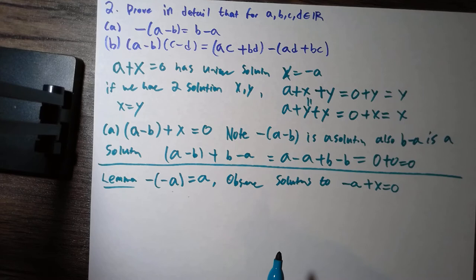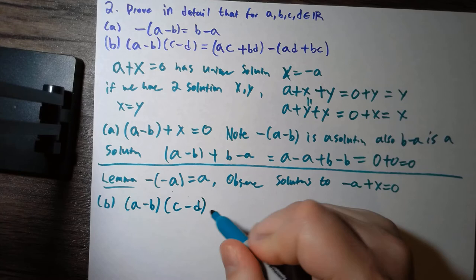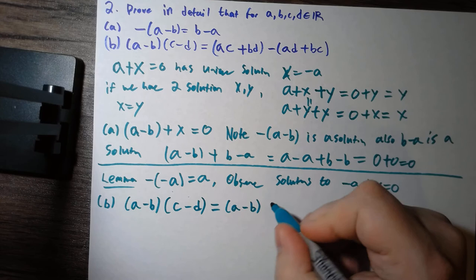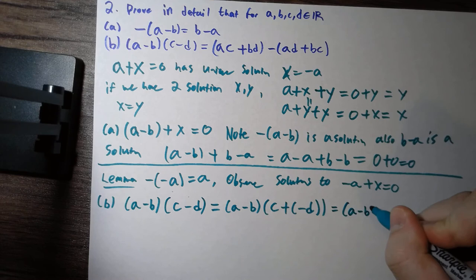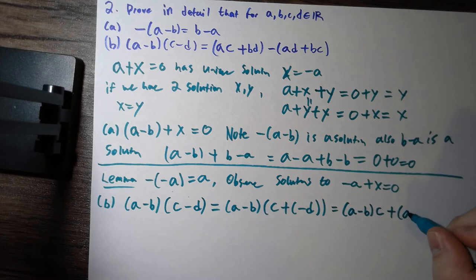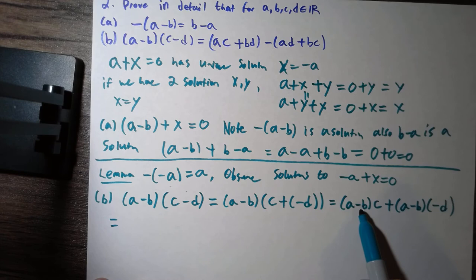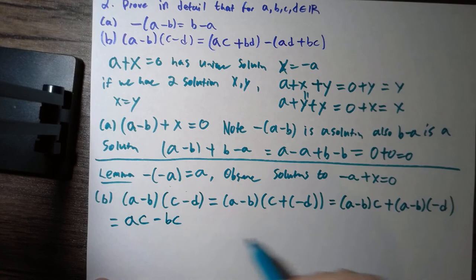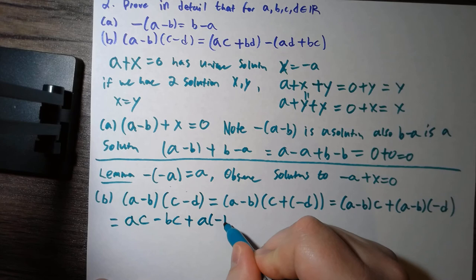Now we can prove part b as follows. What is a minus b times c minus d? Using the lemma, we can write this as a minus b times c plus negative d. Using the distributive property, this equals a minus b times c plus a minus b times negative d. Applying the distributive property again, this becomes a times c minus b times c plus a times negative d plus negative b times negative d.